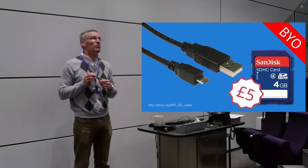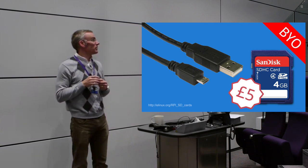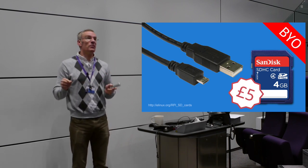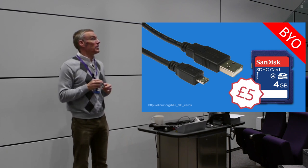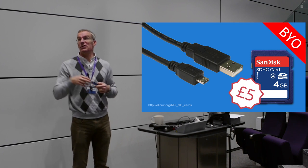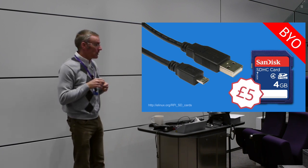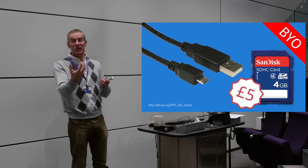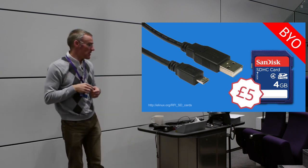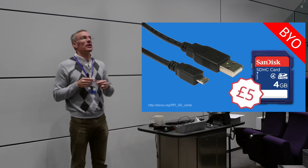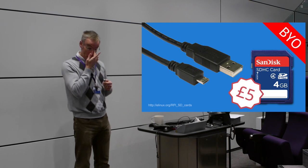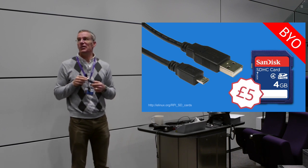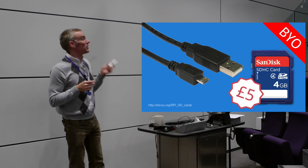At the absolute minimum you must bring to your next lab session an SD card and a micro USB cable. We don't provide those because you probably already have them - any Android or Windows phone uses micro USB. You need at least a 4GB SD card. The speed of the card isn't really relevant - the Raspberry Pi is slow enough already, so a slower card won't make much difference.